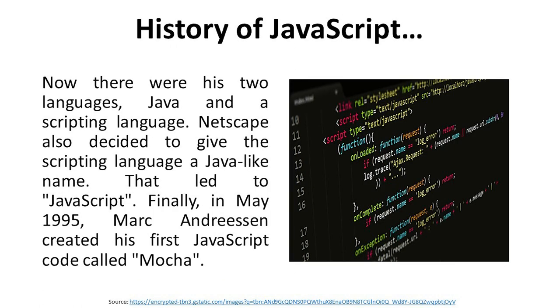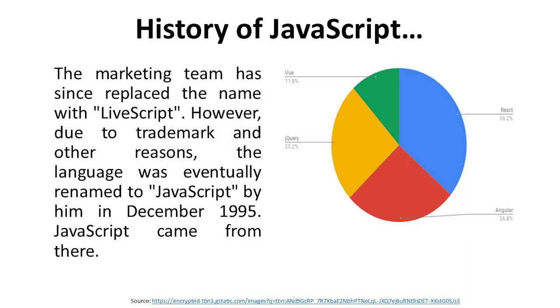There were now two languages: Java and the scripting language. Netscape decided to give the scripting language a Java-like name, which led to JavaScript. Finally, in May 1995, the first JavaScript code was called Mocha. The marketing team later replaced the name with LiveScript. However, due to trademark and other reasons, the language was eventually renamed to JavaScript in December 1995.